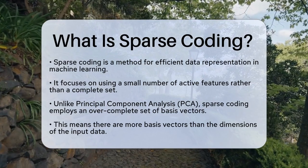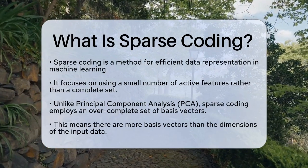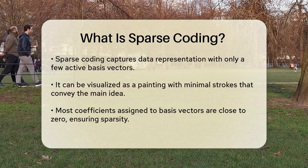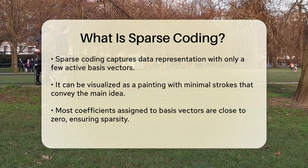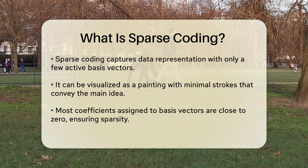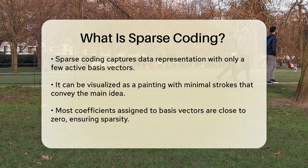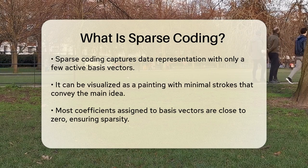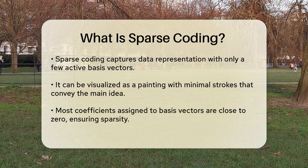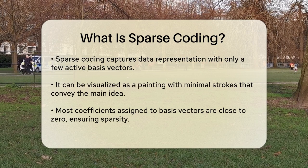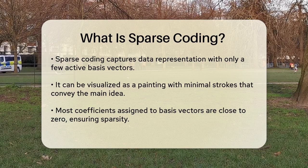This means there are more basis vectors than the dimension of the input data, but only a few of these vectors are used to represent any given data point. Think of it like a painting where most of the canvas is blank, but a few bold strokes capture the essence of the image. In sparse coding, these bold strokes are the few active basis vectors that represent the data.